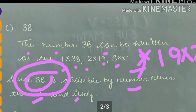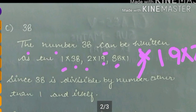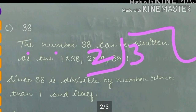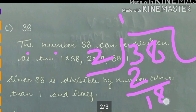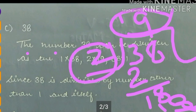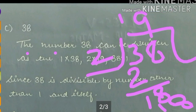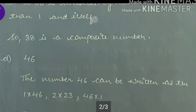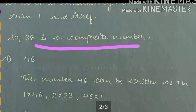38 is divisible by a natural number other than 1 and itself — we have 2 into 19, meaning if I divide 38 by 2, I get 19. So 38 is a composite number.